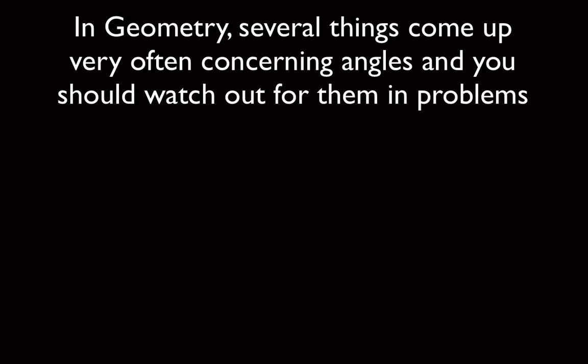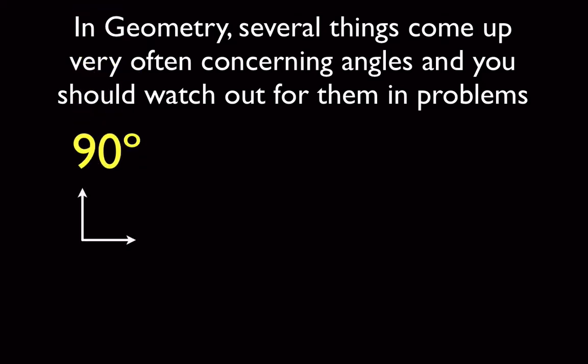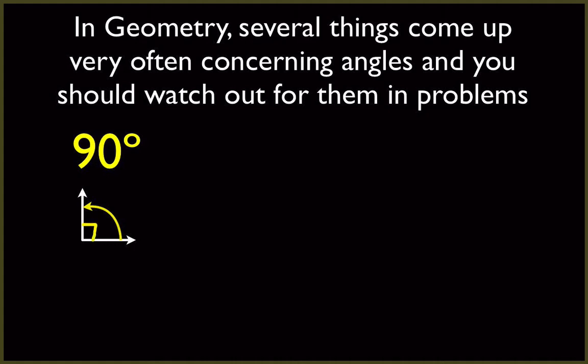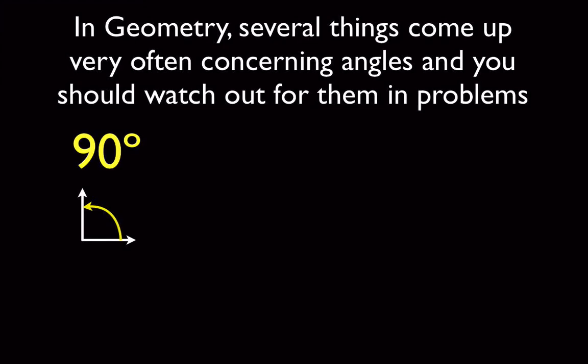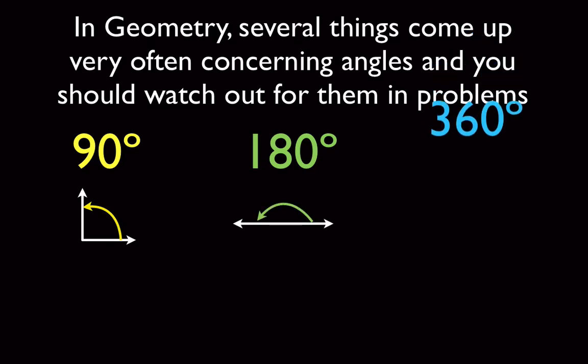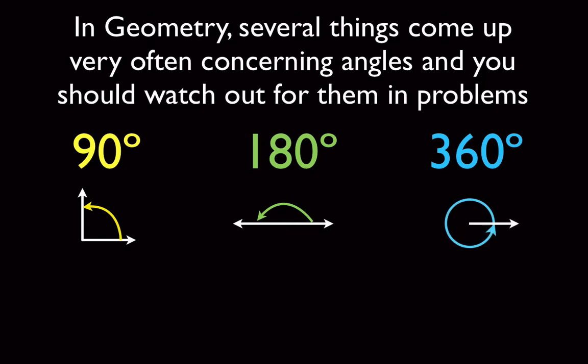Basically in geometry, there are a few very common things that happen. There are 90-degree angles, which are right angles — denoted by the little 90-degree mark. Without that, you can't just assume. In addition to that, we also have 180-degree angles, which are a straight line. And a 360-degree angle, which is something that goes all the way around a straight line, making a circle.